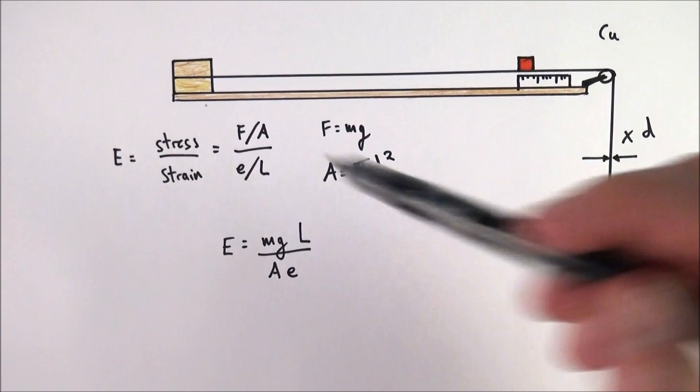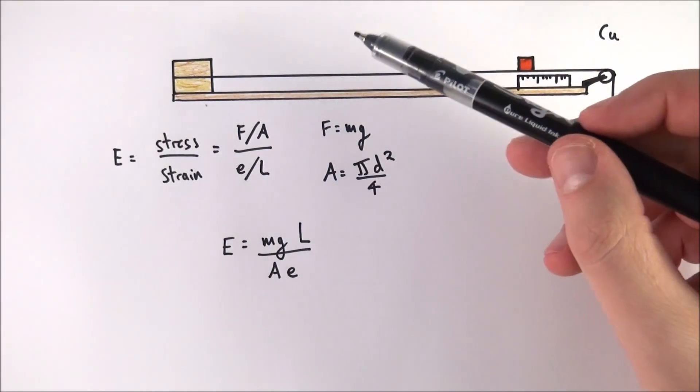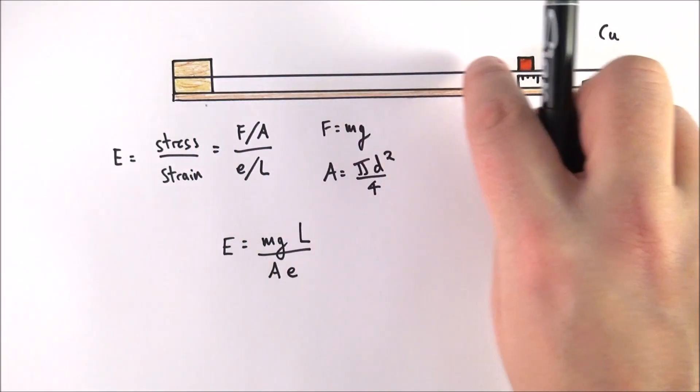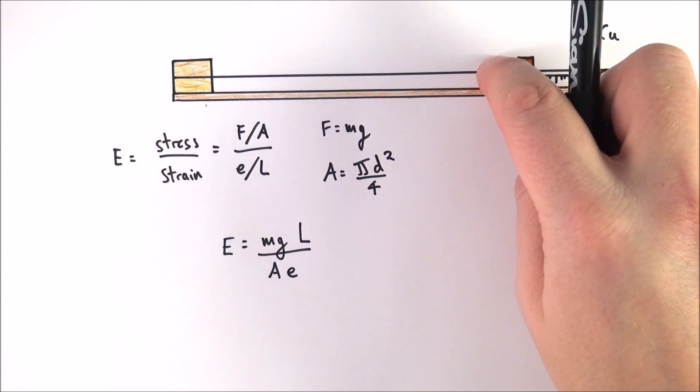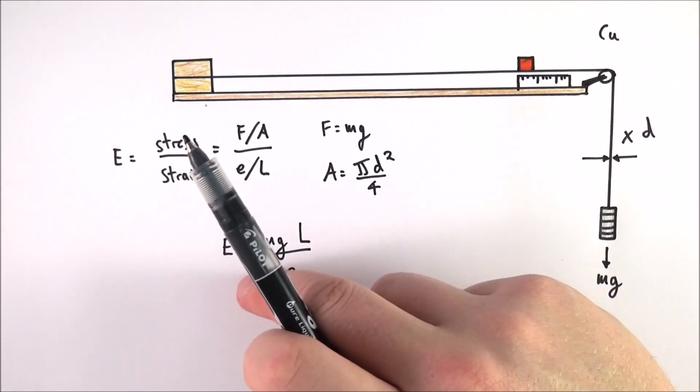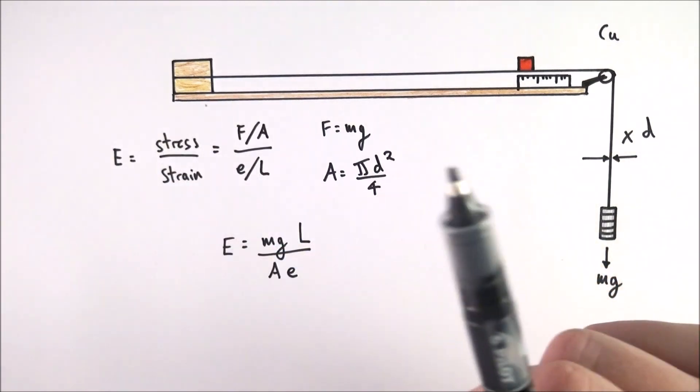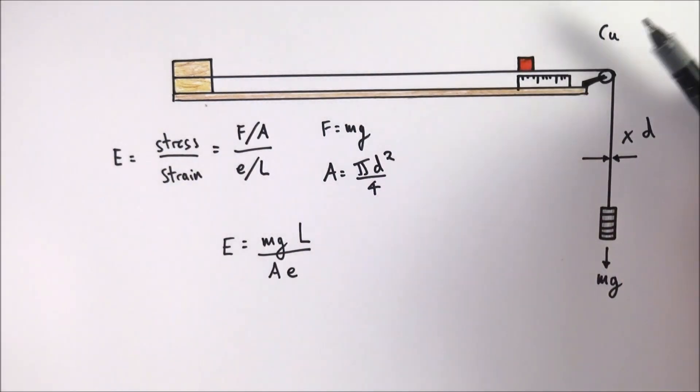So all we need to do then is add some mass on the bottom. We've got a certain length of copper which is going to get longer. We can measure the extension. We measure the area and then we can use that to work out Young's modulus for in this case copper.